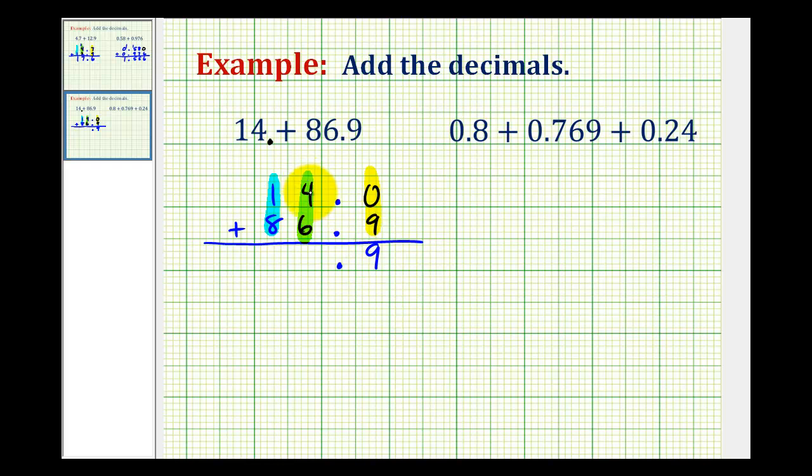Zero plus nine is nine. Four plus six is ten, so we have a zero in the ones place value. We carry a one to the tens. One plus one plus eight would be ten. Our sum is 100.9 or one hundred and nine tenths.